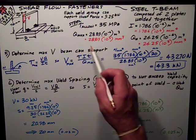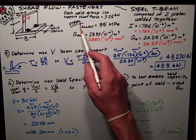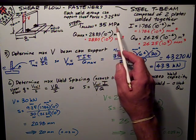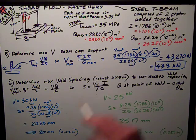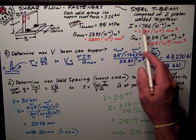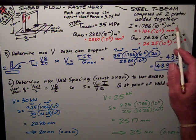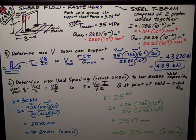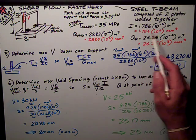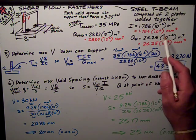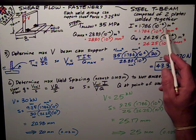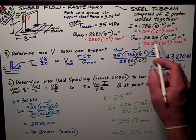Furthermore, we tell you that the steel allowable shear stress is 35 megapascals, and then we give you some section properties. The moment of inertia is 1.786×10^-6 meters to the fourth. As you know, I like to work in millimeters, so I converted it to that by multiplying it by 10^12 to get it in millimeters.